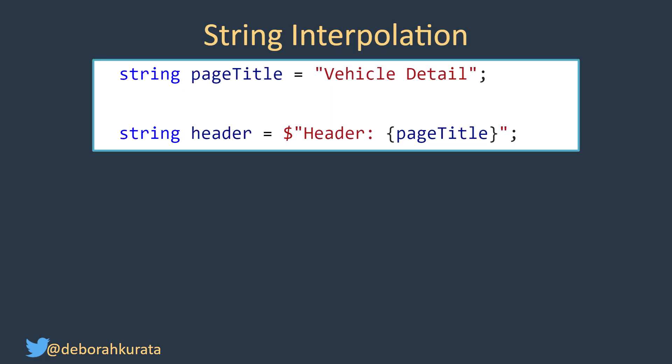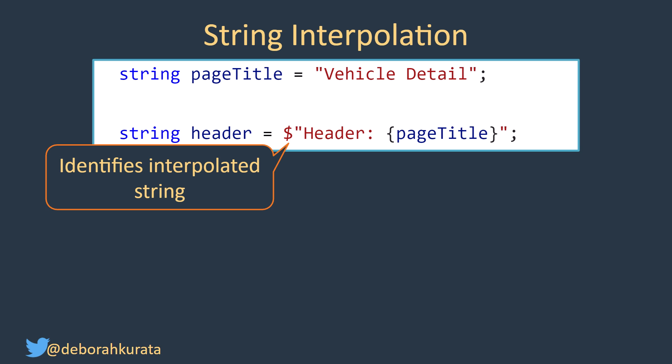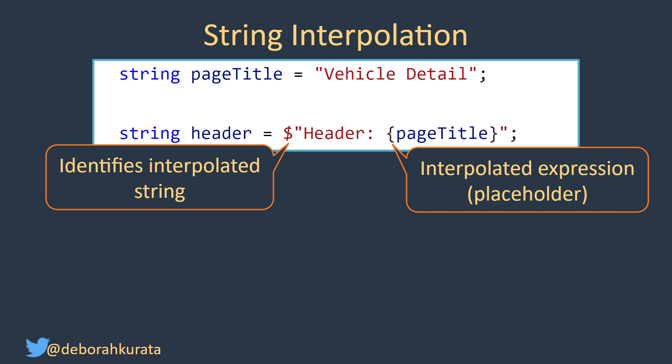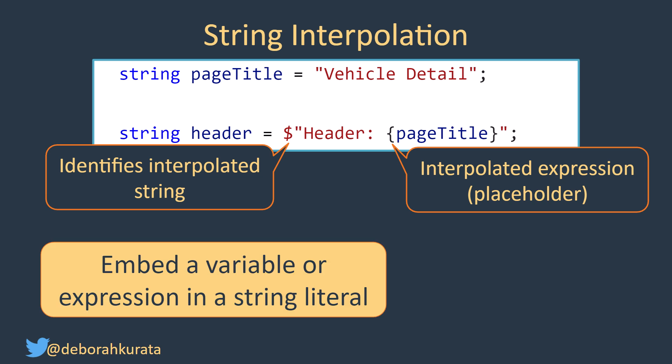Lastly, let's look at what's new with string interpolation. String interpolation allows us to insert an expression into a string literal — we've had this basic feature for a long while. We identify an interpolated string with a dollar sign in front of the first quote, and we add one or more expressions into the string using curly braces. The curly braces act as a placeholder. At runtime, the expression is evaluated and the appropriate value appears in the string, in place of the curly braces and expression. This way, we can embed a variable or expression in a string literal.